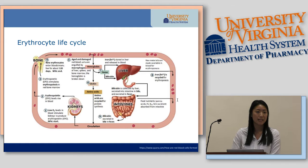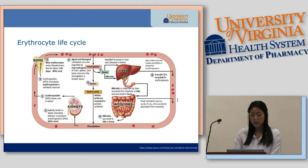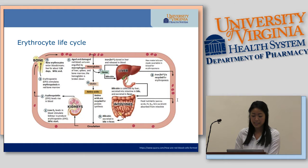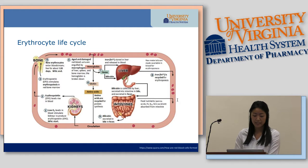Red blood cells live in your circulation for about 120 days, where once they're aged and damaged, they're recycled and destroyed by macrophages. Globin proteins from hemoglobin are broken down into amino acids and recycled into new proteins. The heme group from hemoglobin is broken down into iron and bilirubin. Iron is then cycled back into new hemoglobin, and bilirubin is excreted via bile and the feces.